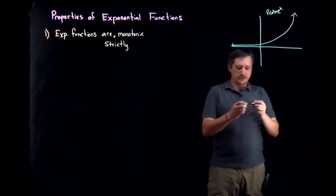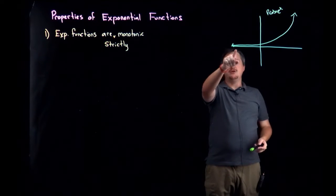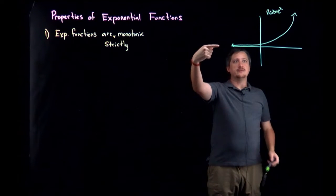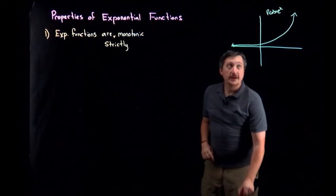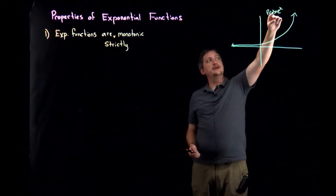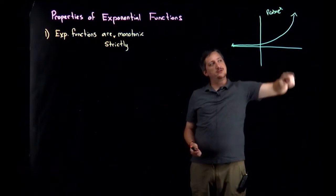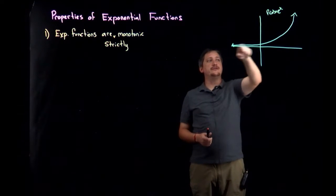But even though it looks really close to flat on this left side, it's not - it's still getting smaller strictly. If I'm going from left to right, that's telling me that I'm actually always increasing in this case. If I put a negative in front of the function that would flip it and then I'd be always decreasing. But the point is that it's never flat.